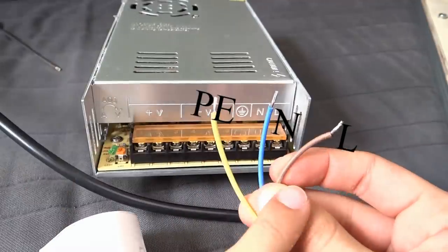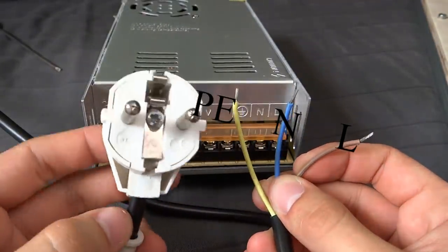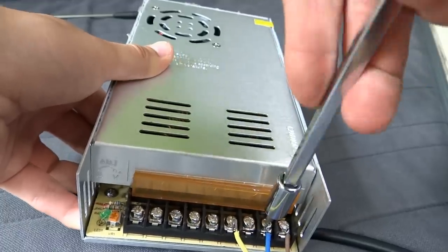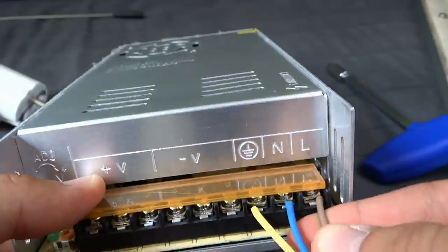Connect brown cable to the L of power supply, blue to N, and yellow-green to PE. Don't connect anything to power yet. We have to firstly connect the Arduino to power supply.